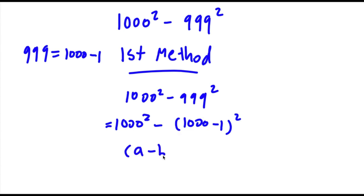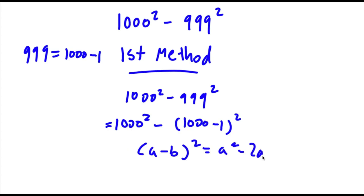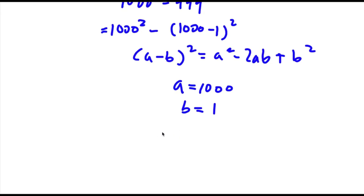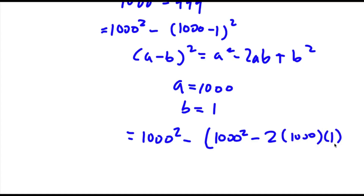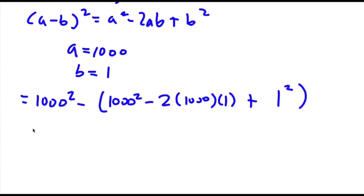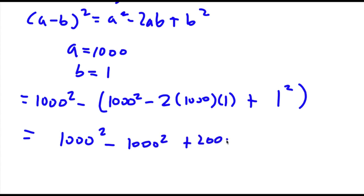Now if I have something in the form (a minus b) squared, this is equal to a squared minus 2ab plus b squared. So in this case, a is equal to 1000 and b is equal to 1. So this is going to equal 1000 squared minus [1000 squared minus 2(1000)(1) plus 1 squared], which is equal to 1000 squared minus 1000 squared plus 2000 minus 1.